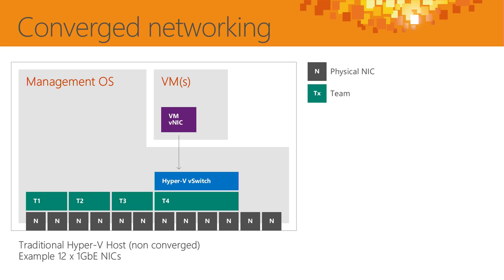I want to talk about deployment architectures and best practices because converged networking is becoming more prevalent — many organizations are thinking about how to reduce complexity in the data center. This should be familiar: you've bought a server, got four ports on board, added another quad-port NIC, added another, because this is going to be a virtualization host, and suddenly you've got 12 one-gig NICs in this host, 20 of those hosts — that's a lot of cables and switches. What would a common deployment for a Hyper-V virtualization host look like?